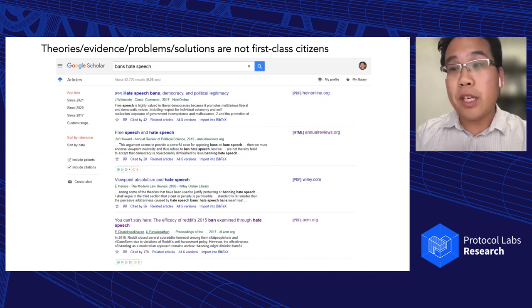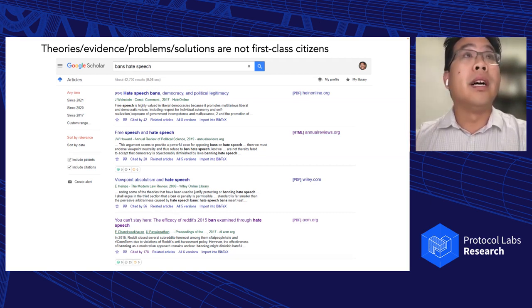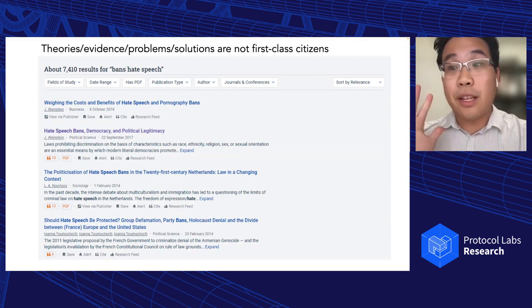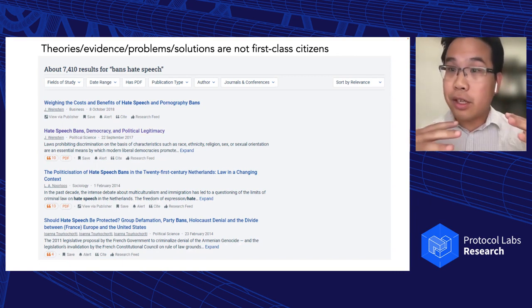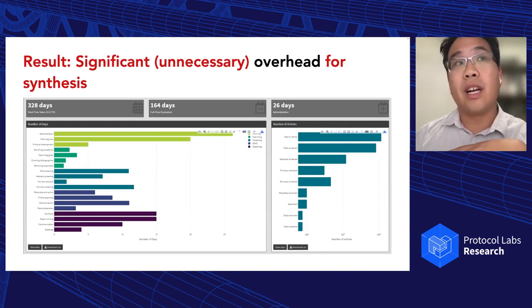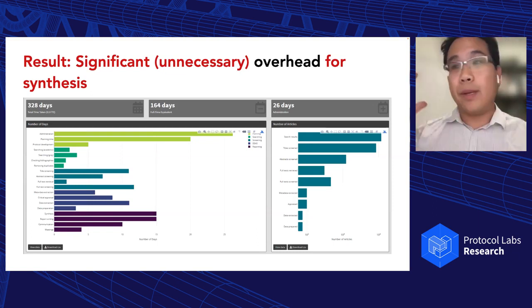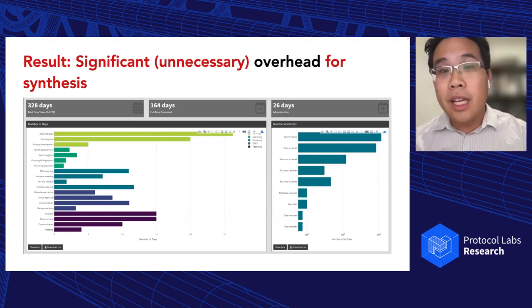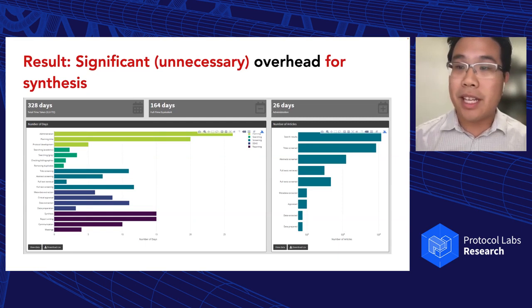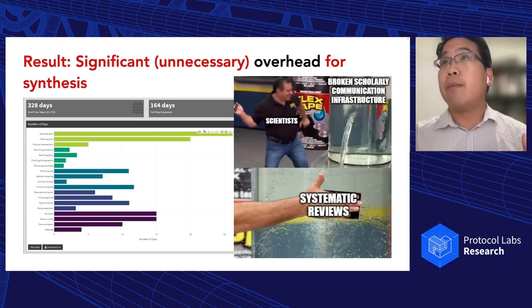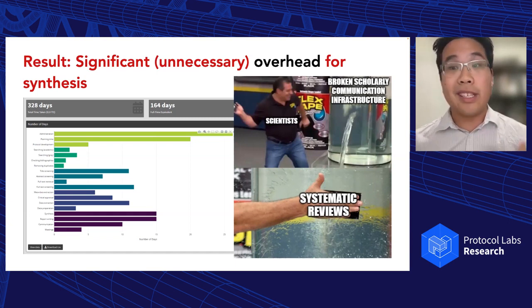For example, if you're interested in whether bans are an effective intervention for hate speech, you key that into Google Scholar and what you get back is a bunch of papers — many will be relevant and in the same topic area, but none will directly answer your question about the evidence for a particular class of intervention. Theories, evidence, problems, solutions — they're not first-class entities in tools like Semantic Scholar. The data structure is what's at issue. We have an entire industry of systematic review tools dedicated to working against the underlying data structure.